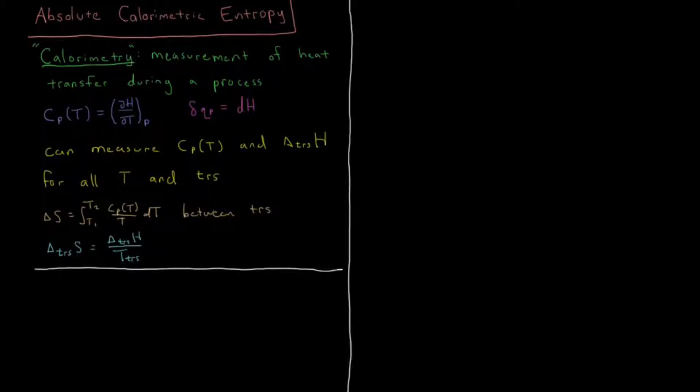So what we're going to use is called calorimetry, and calorimetry is just the measurement of heat transfer during a process. It could be a physical process, it could be a chemical process, it doesn't matter. All that matters is you have an experimental setup where you can measure the variables of state of interest, and you can measure the heat that is flowing into or out of the system as you're keeping track of those state variables.